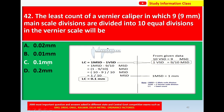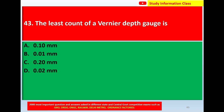Note: 1 MSD = 1 main scale division; 1 VSD = 1 vernier scale division; LC = least count. Next question: The least count of a vernier depth gauge. Options: A) 0.10 mm, B) 0.01 mm, C) 0.20 mm, D) 0.02 mm.